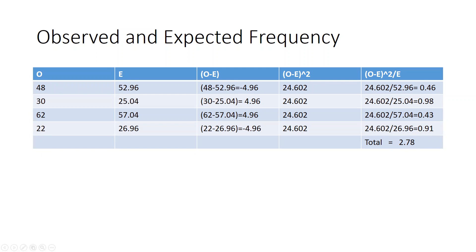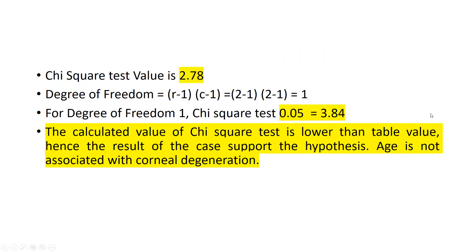The calculated chi-square value is 2.78. The degrees of freedom = (rows−1) × (columns−1) = (2−1) × (2−1) = 1. From the chi-square table at 0.05 significance level with df=1, the table value is 3.84. Since the calculated value (2.78) is lower than the table value (3.84), we fail to reject the null hypothesis. Therefore, age is not associated with corneal degeneration in this case.